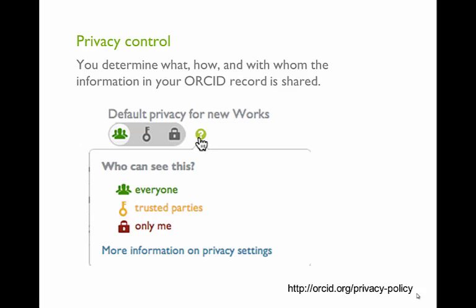An important feature is that you control what information is publicly shared. Even if an employer sets up your ORCID record, upon claiming it you maintain sole control over the privacy settings. Privacy can even be controlled at an individual item level. There are basically three levels: public — data are completely viewable and open for everyone; limited access — data viewable by parties you select, so maybe you say Thompson Reuters has access to your email and affiliation info but not the whole world; and private — data not viewable by any third parties via the registry.